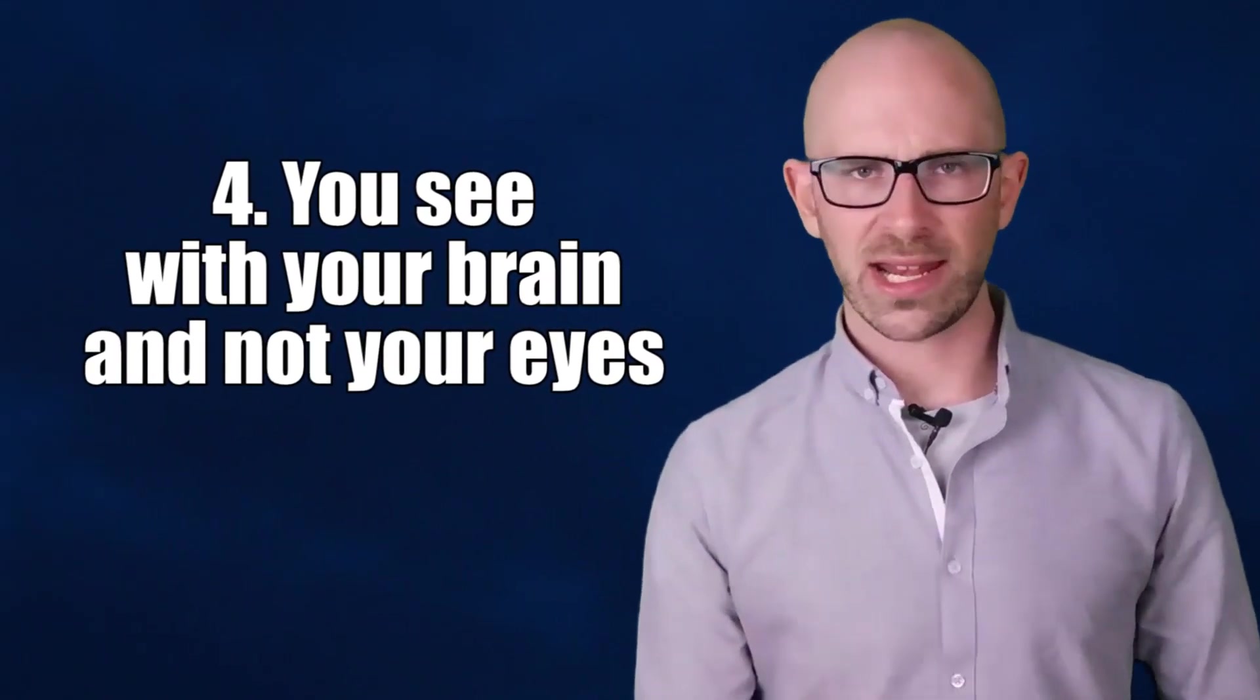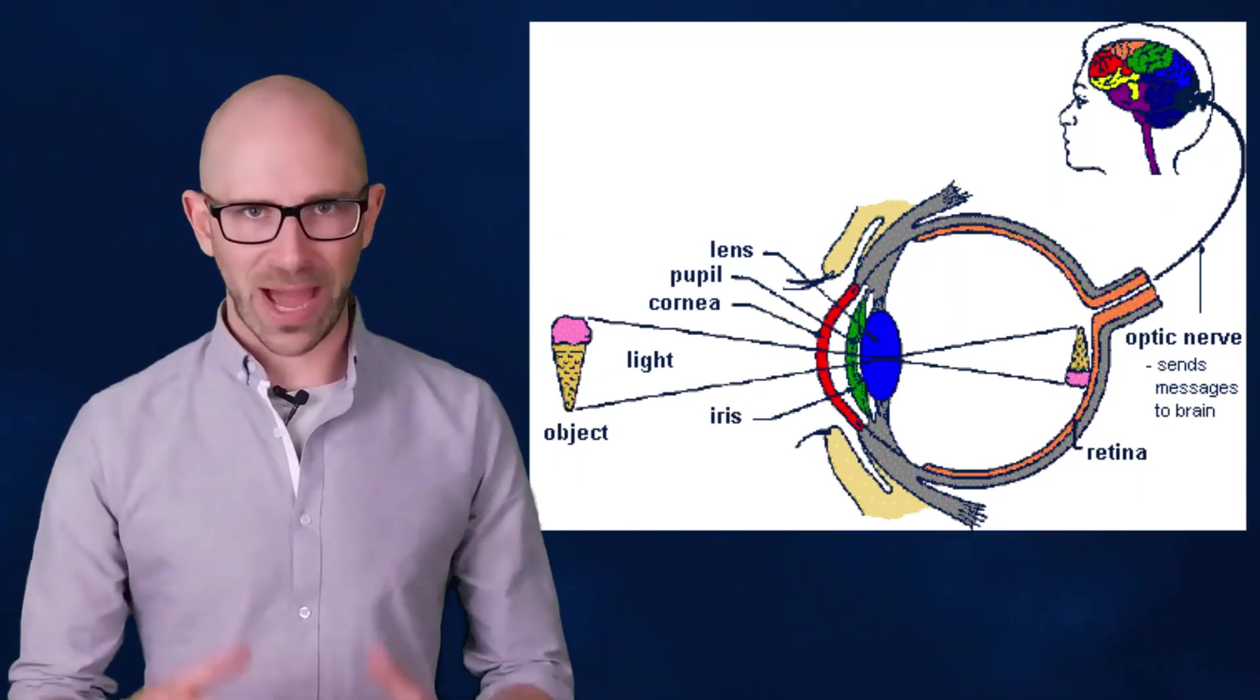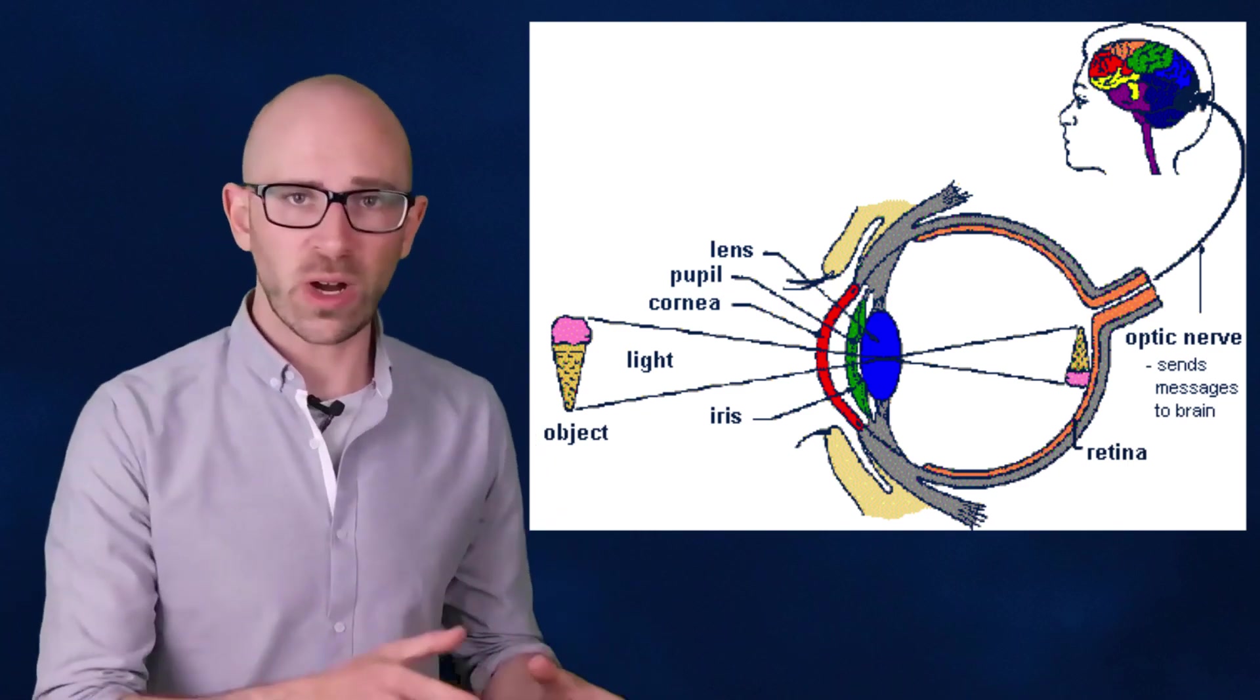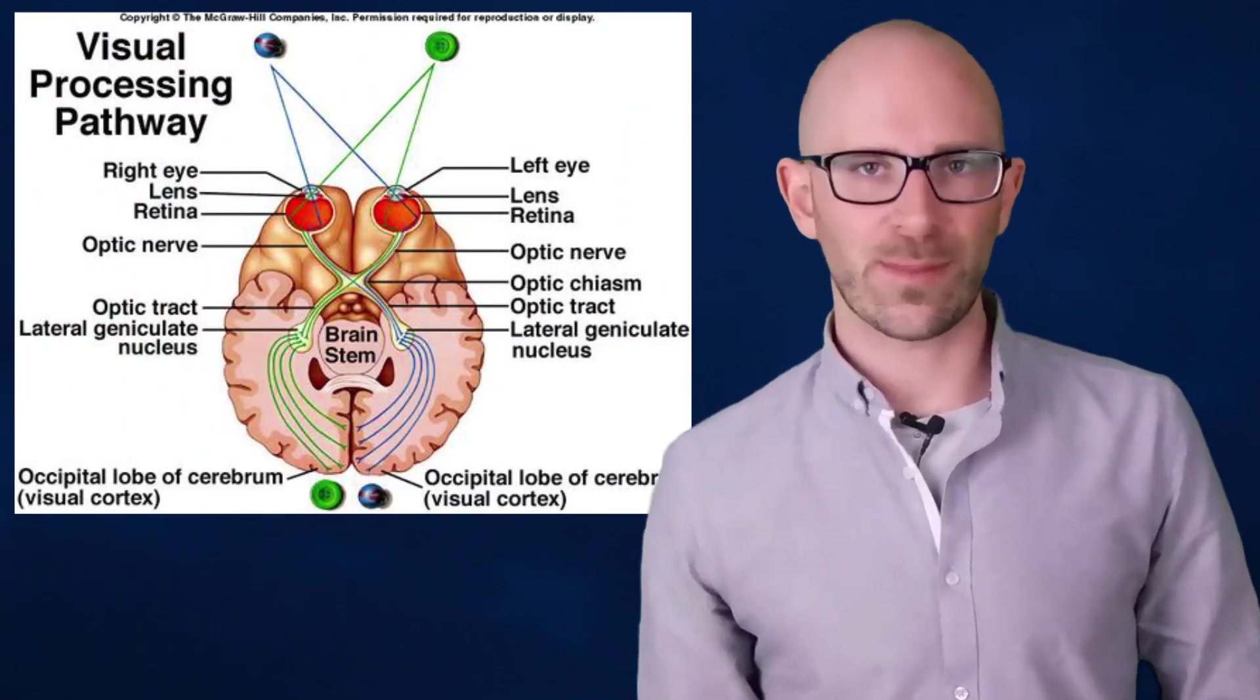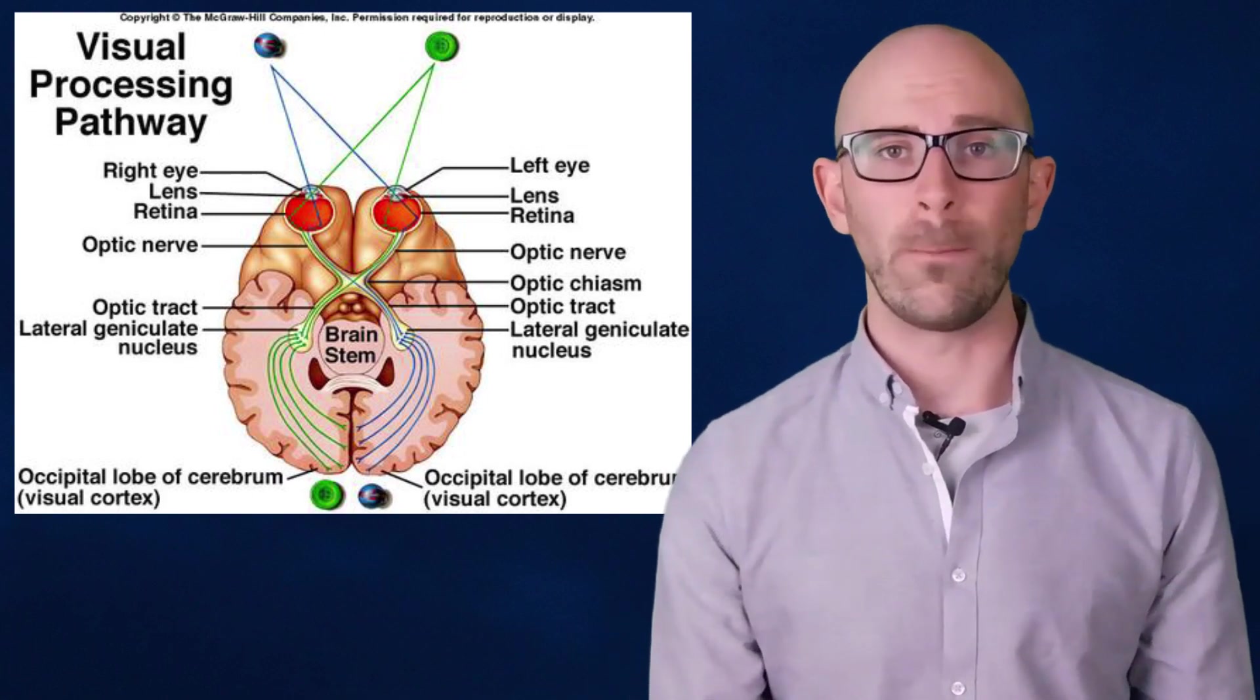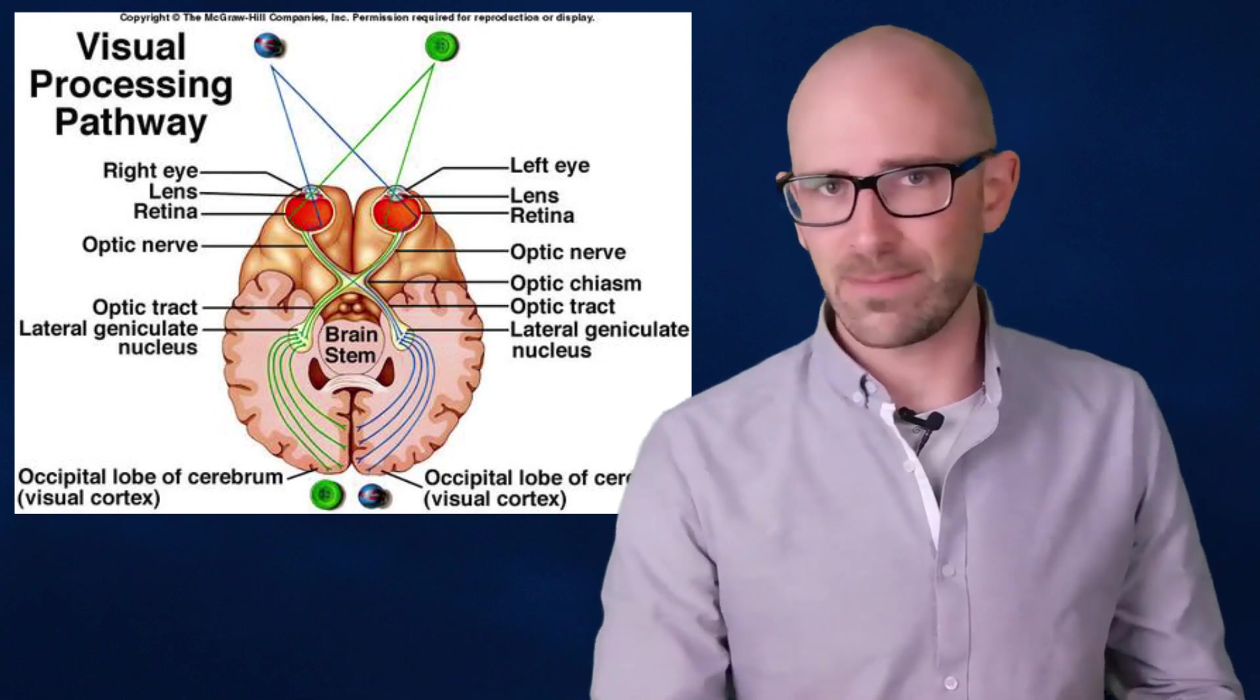You see with your brain, not your eyes. The function of your eyes is to collect all the required information about the object you are looking at. This information is then passed from your eye to the brain via the optic nerve. It is the brain where all this information is analyzed to enable you to see the object in its finished form. This is not to say that your eyes don't play an important role, as they certainly do.